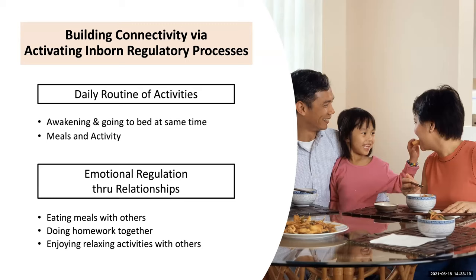Other processes that build connectivity by activating inborn regulatory processes are a daily routine of activities and emotional regulation through relationships. Believe it or not, getting up, awakening, and going to bed at the same time are crucial for the formation of brain networks and emotional and physical health. Having activities and meals at the same time, and through relationships — spending time with others, doing homework together, and enjoying relaxing activities — all contribute.